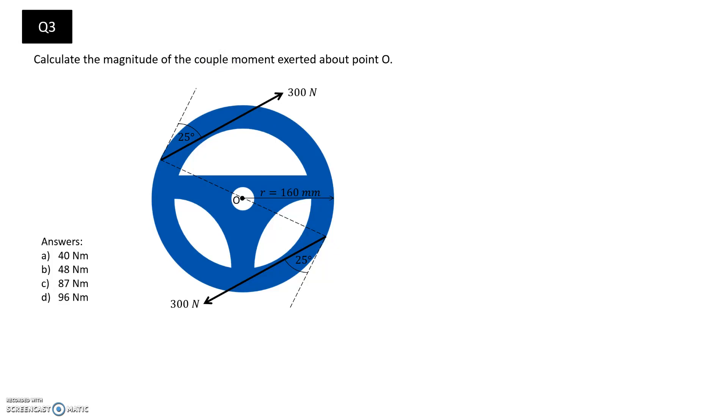The other option is to apply the equation for a couple, which is that the moment is equal to the force multiplied by d, which is the separation distance between those two forces. That's the approach I'm going to apply right now. The force is pretty easy, we can see it's equal to 300 newtons here.